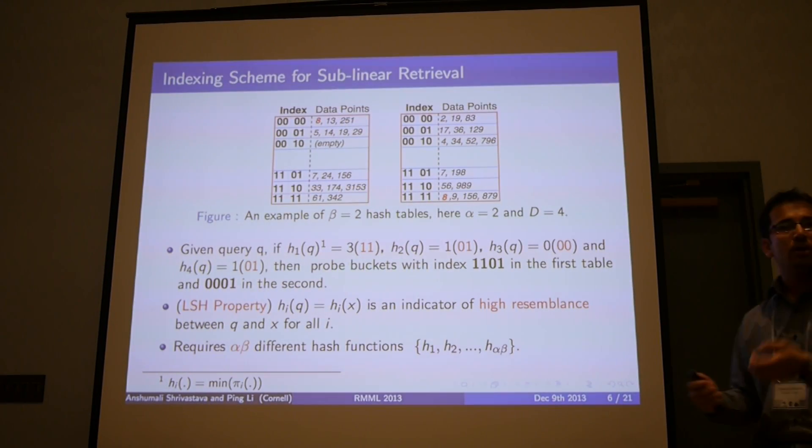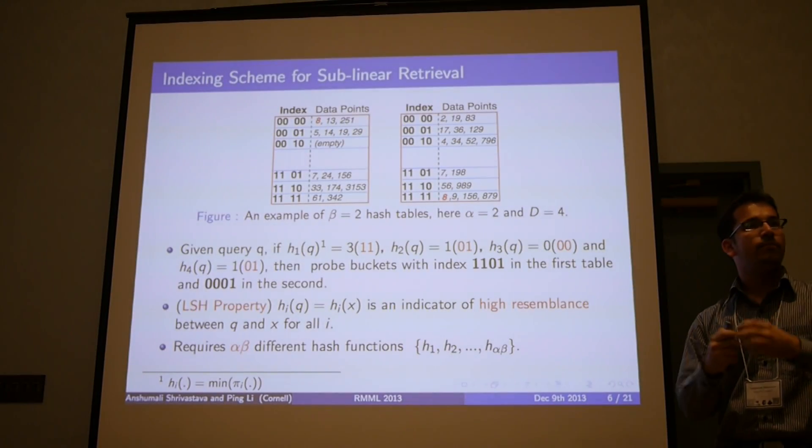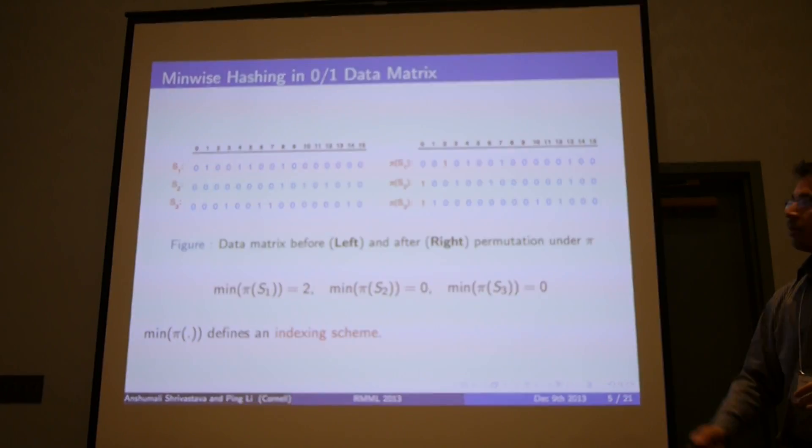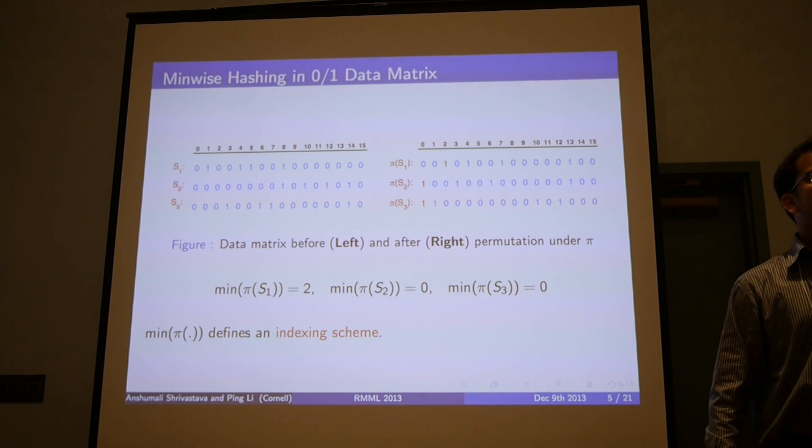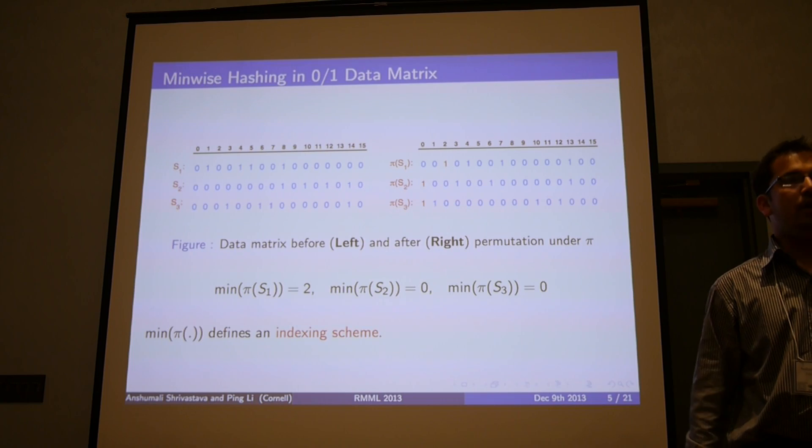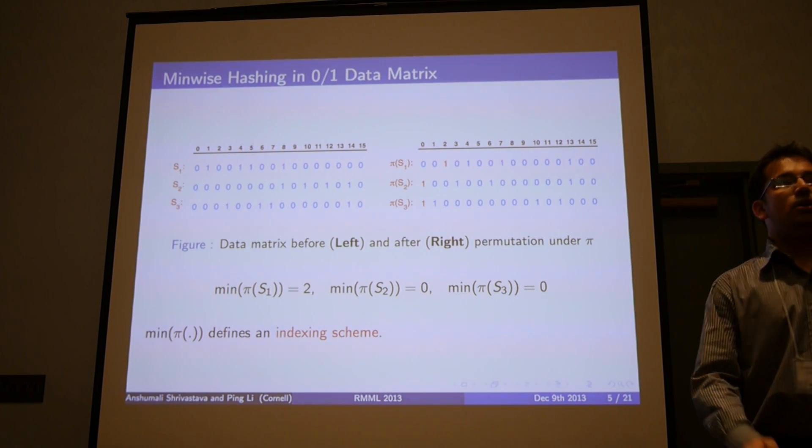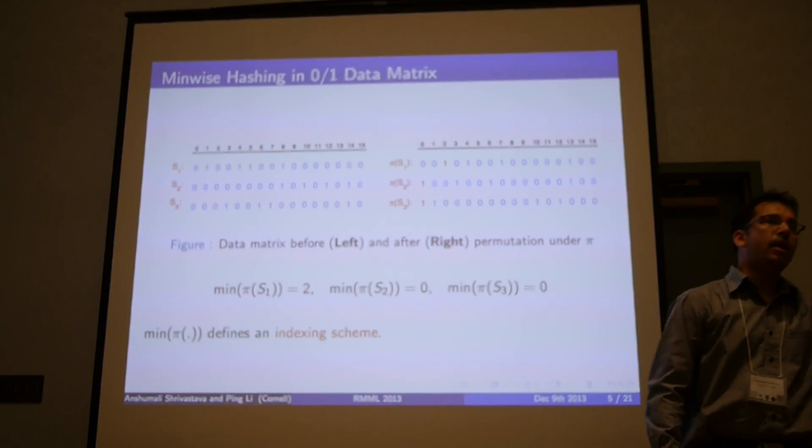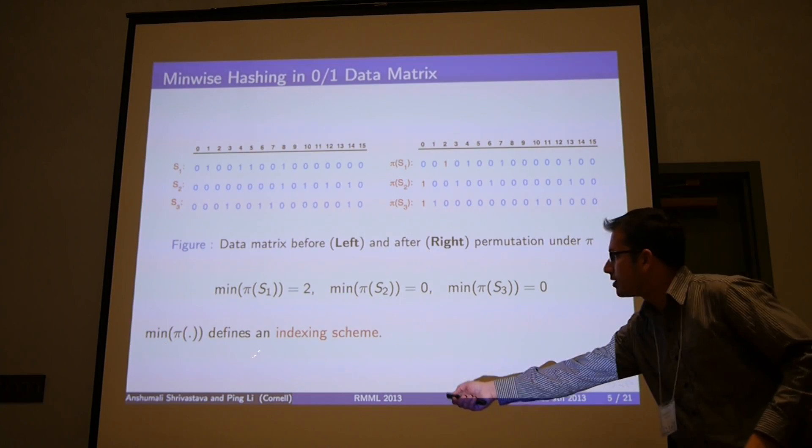This actually defines an indexing scheme. Here is the locality sensitive hashing algorithm in a nutshell. It's just a toy example to illustrate how this helps in doing sublinear search. There was a question about permutations. If I take the same set twice, I'm drawing the permutation at random and then applying to all of them. So now this defines an indexing scheme, and here is a toy example of how this works in the case of locality sensitive hashing.